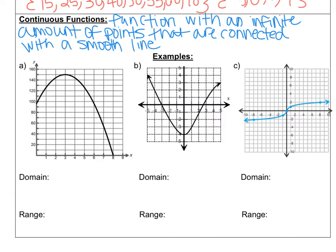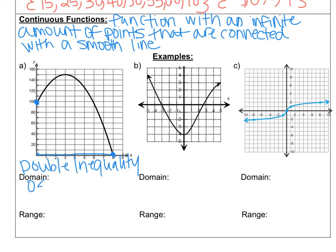Continuous is a little bit harder because you have more going on than discrete graphs. On this first graph A, I have a beginning and an endpoint — my graph starts at 0 and ends at 8 for my domain. Anytime you have a beginning and an end, you're going to do a double inequality. For the domain, my least value is at 0 and my greatest value is at 8, so I would write: 0 ≤ x ≤ 8.